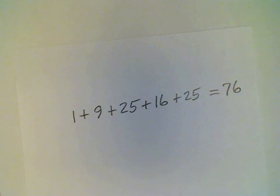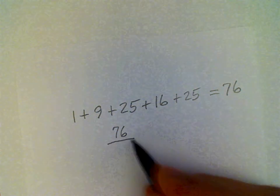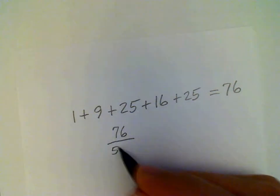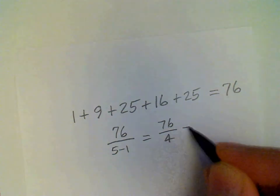And then we need to divide this by n minus one. In this case we have five data values, so we have to divide this by four. So 76 divided by five minus one, or 76 divided by four, which is 19.